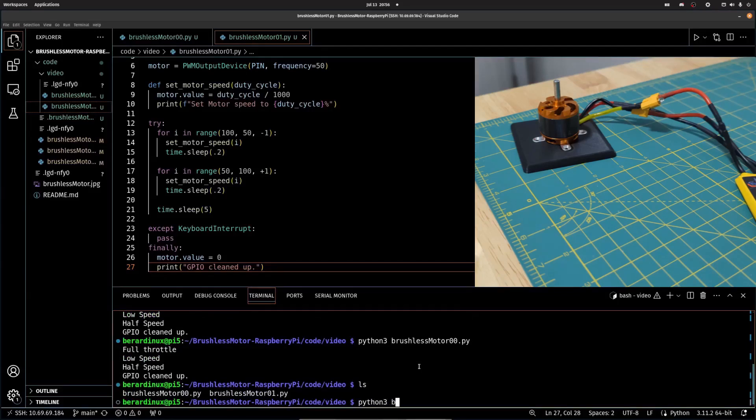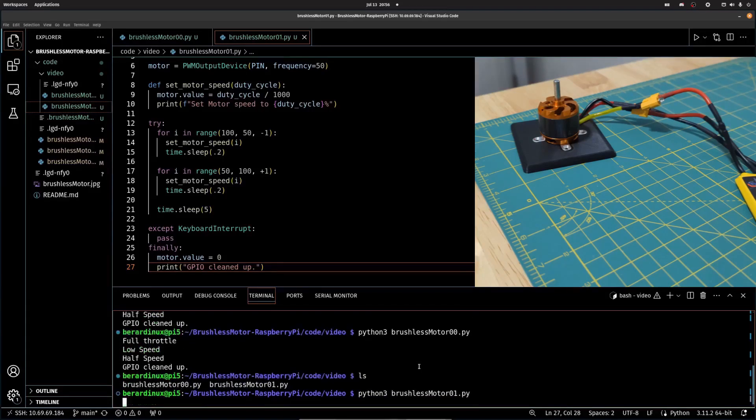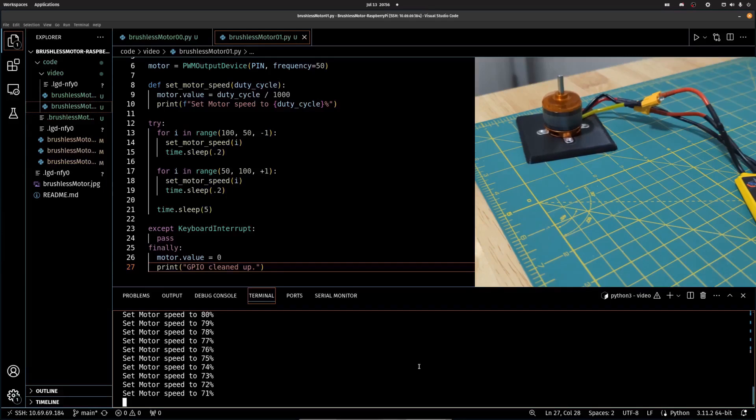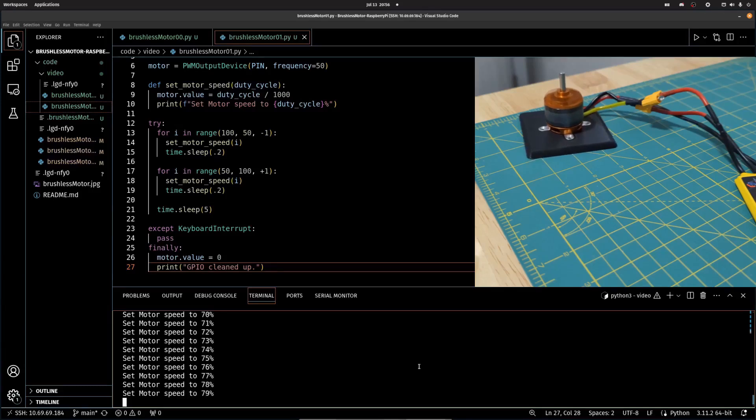The main benefit to this is if you do a control C, you can see at the end we did motor.value equals zero. So, before it actually quits, it will set the PWM signal or the duty cycle to zero before we exit out of the script. And you can see it's just stepping down, stepping back up until it gets to 100. And it's going to sit there for five seconds. That's it.